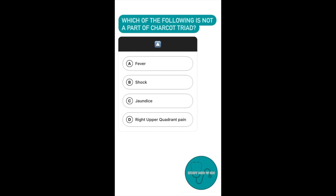Question number four. Which of the following is not a part of Charcot's triad? Option A, fever. Option B, shock. Option C, jaundice. Option D, right upper quadrant pain.